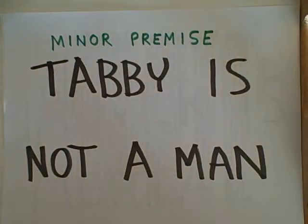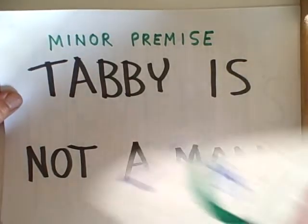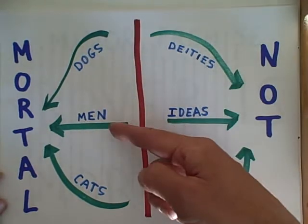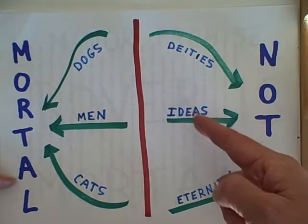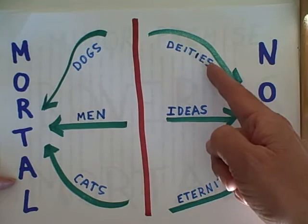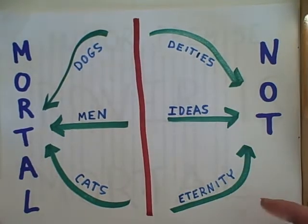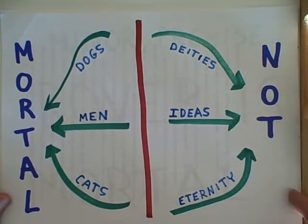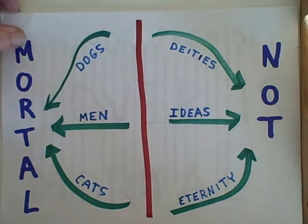Tabby is not a man. I don't know if we can reach a valid conclusion from this one. We know that Tabby is not on the man pathway to mortality, but we don't know if Tabby is a deity or a cat. If Tabby were a cat, that's another pathway to mortality. If Tabby was on one of the immortal pathways, Tabby would not be mortal. So merely knowing that Tabby is not a man does not tell us whether Tabby is mortal or not mortal.